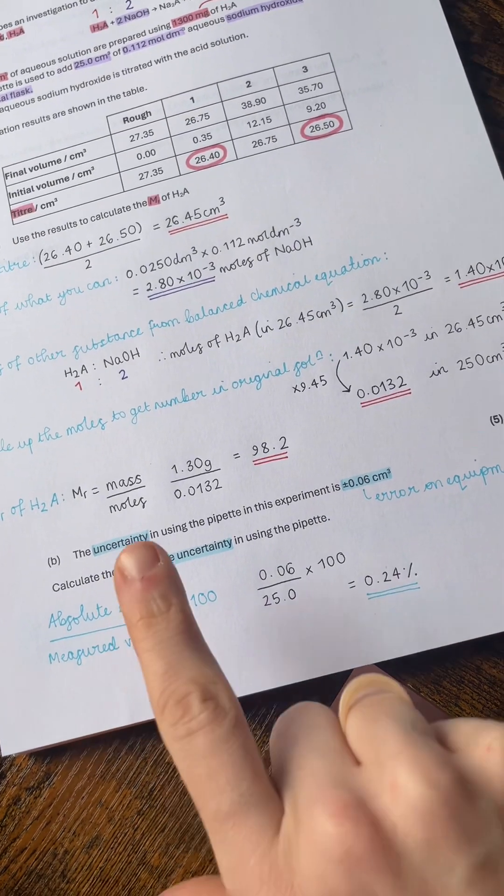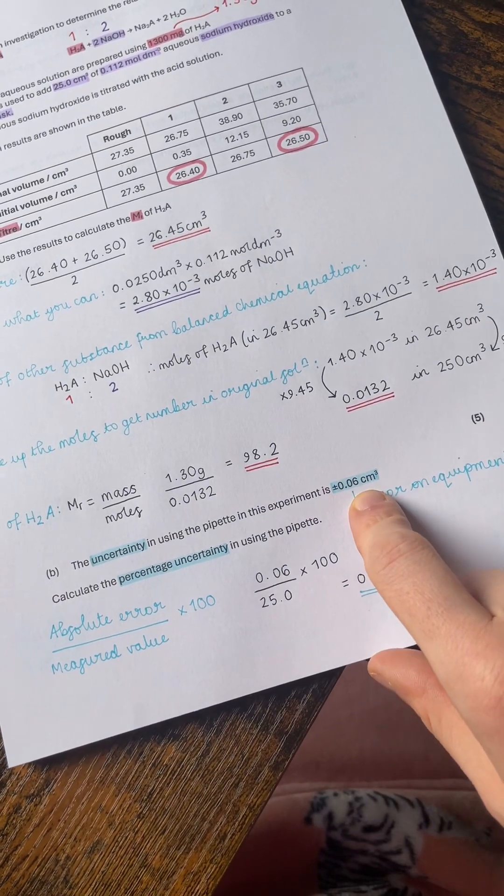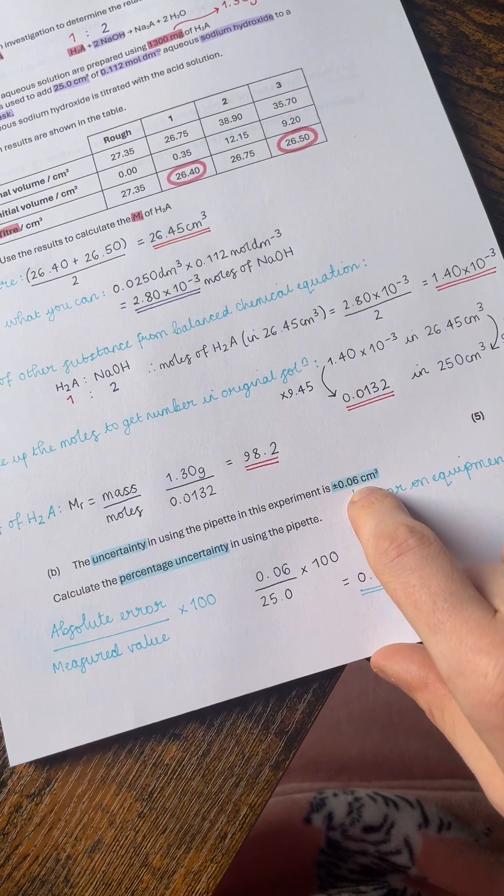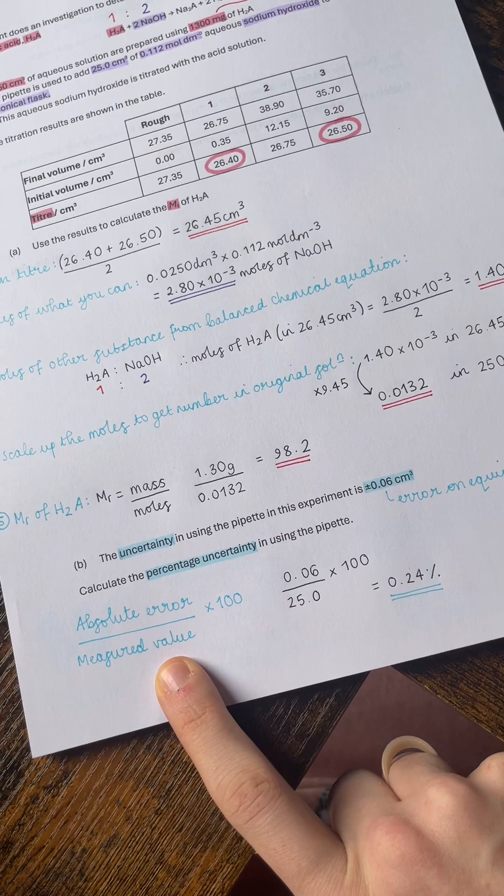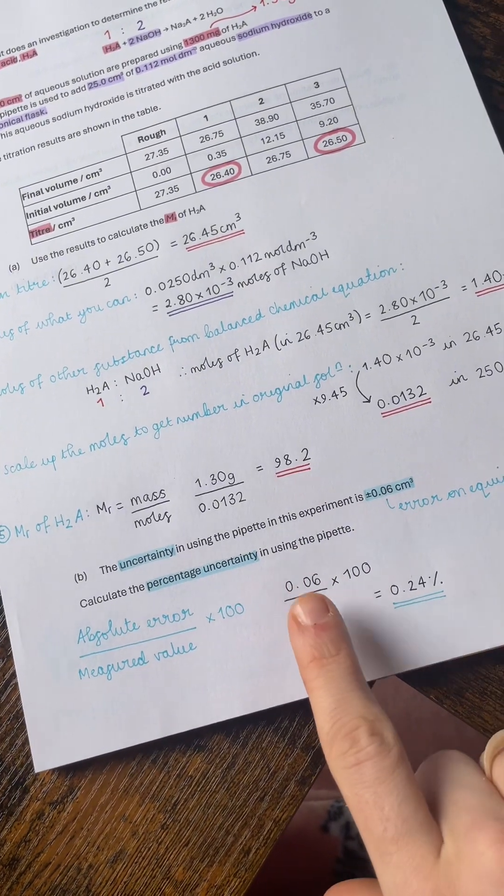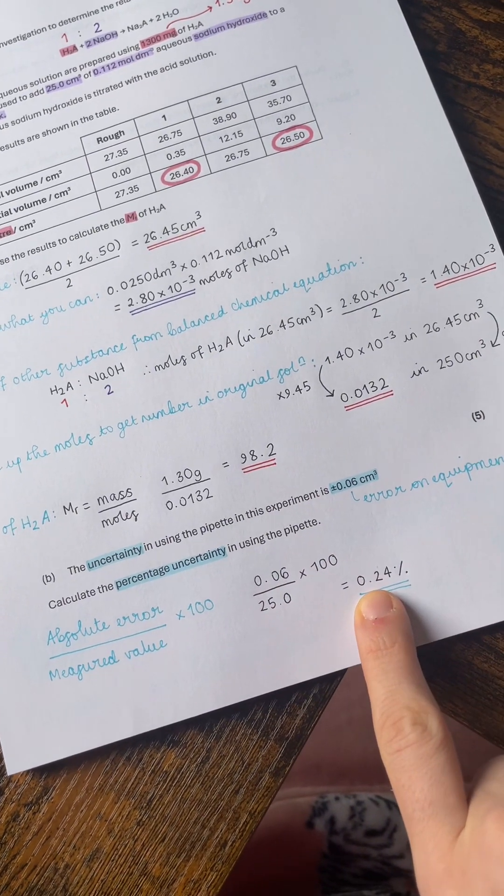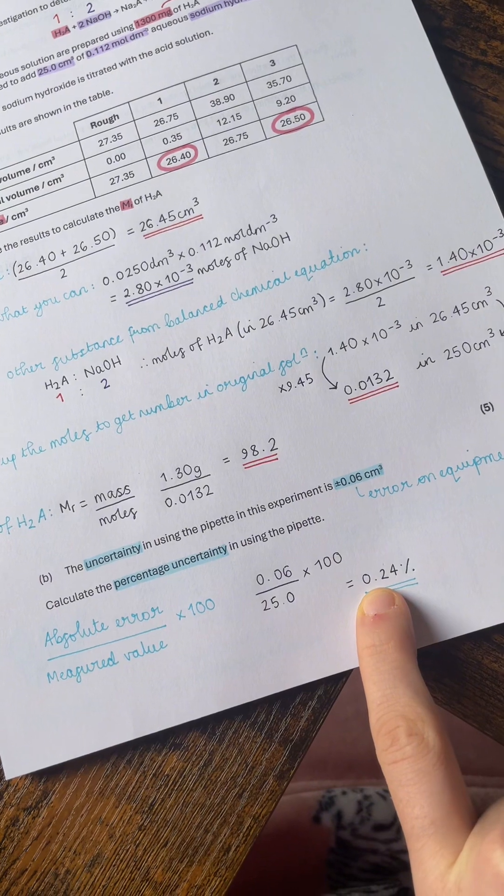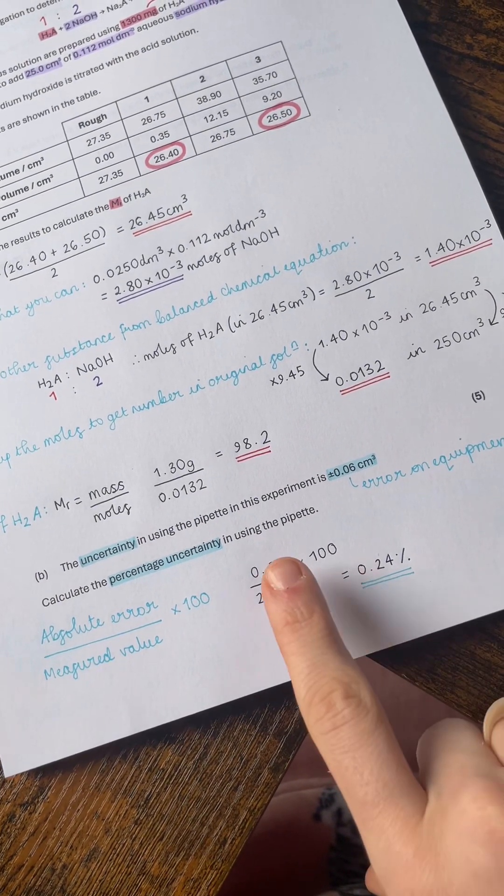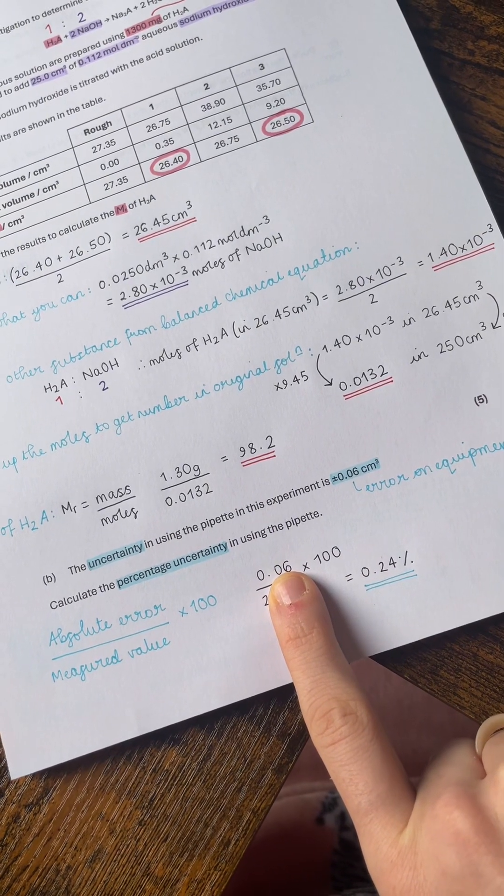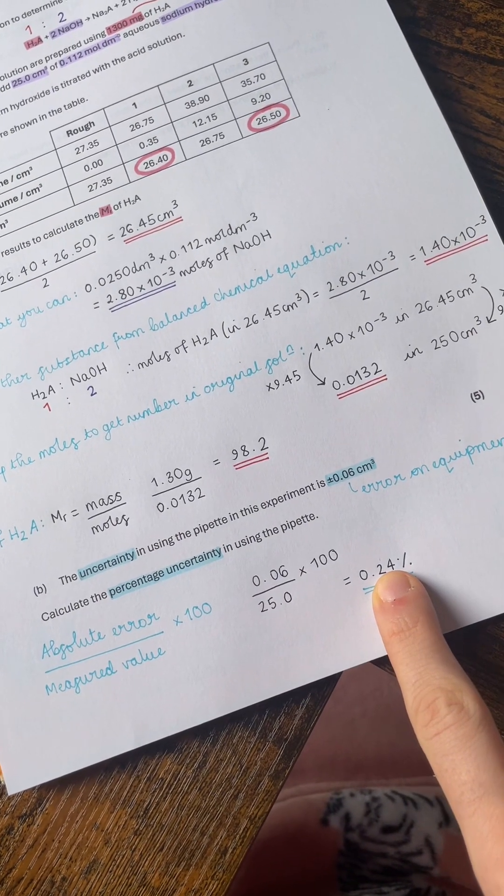To work out percentage uncertainty, this is the equation that we need to remember. We take the absolute error on the equipment, which for the pipette is ±0.06, divide it by whatever value you've measured using that piece of equipment, which was the 25 cm³ of the sodium hydroxide, and then we're timesing it by 100 to get it as a percentage. I have given my answer here as 0.24%.